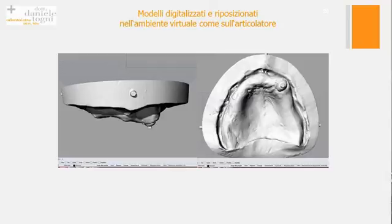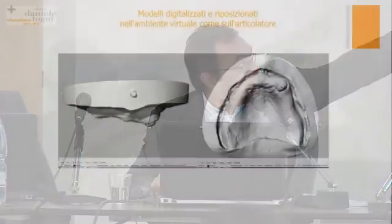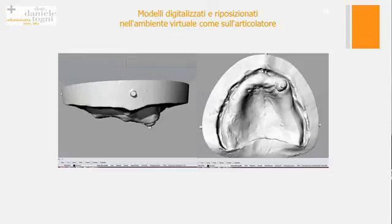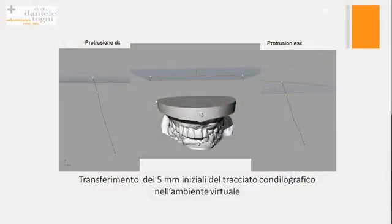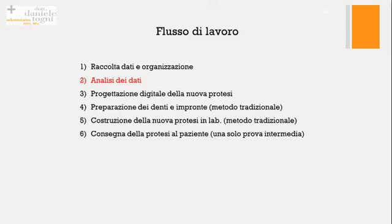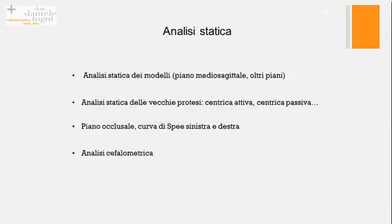Questa è la situazione del modello superiore delle mucose della paziente - modello iniziale, prima di fare una protesi - inserito nello spazio virtuale. Il modello è stato digitalizzato ed è stato riposizionato in Rhinoceros, un CAD. Sopra vedete il piano assi orbitale, l'asse cerniera. Quando abbiamo fatto questo lavoro facevamo il trasferimento dei primi 5 mm del tracciato della coniografia millimetro per millimetro. Abbiamo preso il tracciato di protrusiva, lo abbiamo trasferito nello spazio, lo stesso per la meditrusione, e una volta trasferite tutte le informazioni si fa l'analisi dei dati.